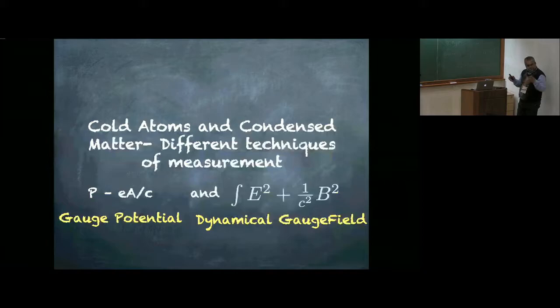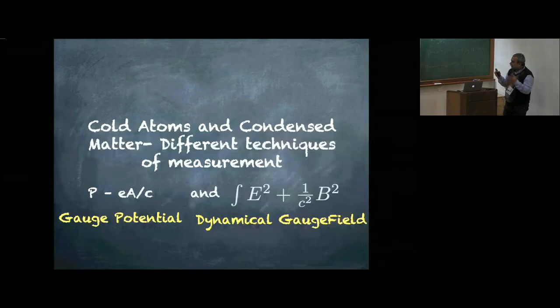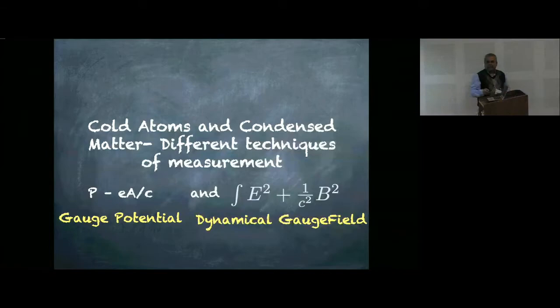I work in both cold atom and condensed matter fields. I am primarily a condensed matter person and also look at cold atom problems from a condensed matter perspective. Their measurement techniques are very interesting, and this talk is going to veer around the issue of gauge potentials and the dynamical gauge field.